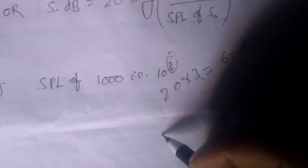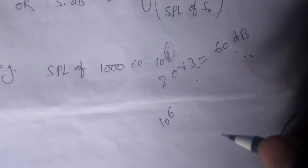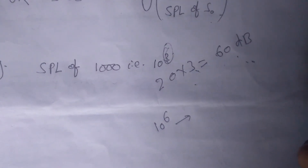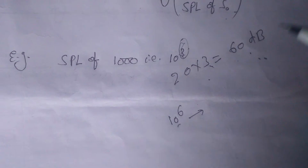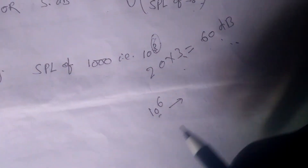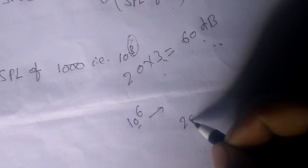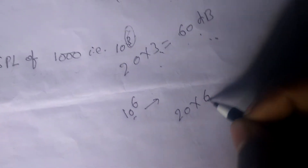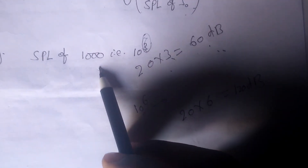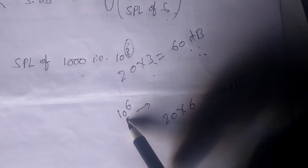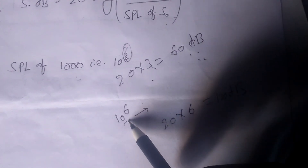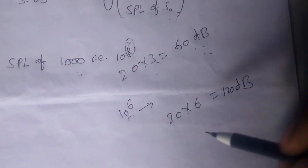Similarly, if any sound has an SPL of 10 to the power 6 — that means 1 million — times the reference sound, then it will be written as 20 multiplied by 6, which equals 120 decibel. So if a sound has an SPL of 1000 times the reference it is 60 dB, and if it has an SPL of 1 million times the reference it becomes 120 decibel. Thank you, I hope you understood it very well.